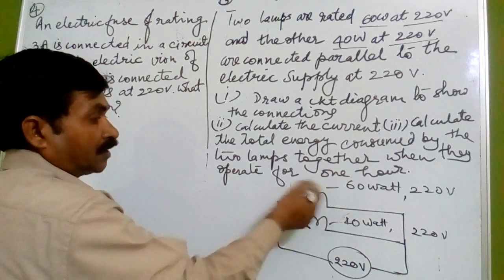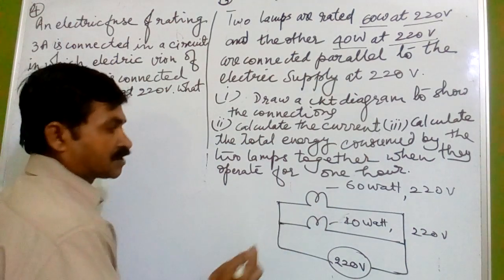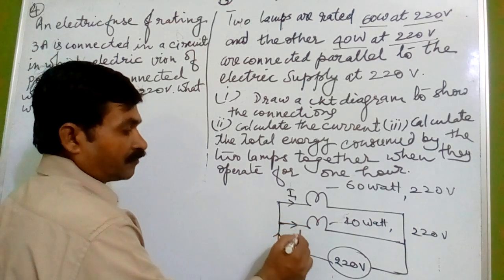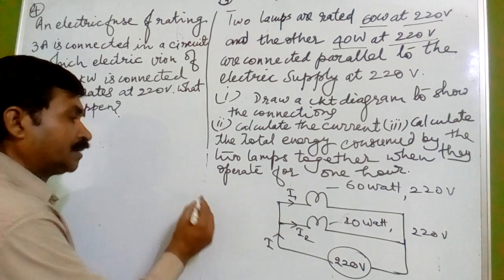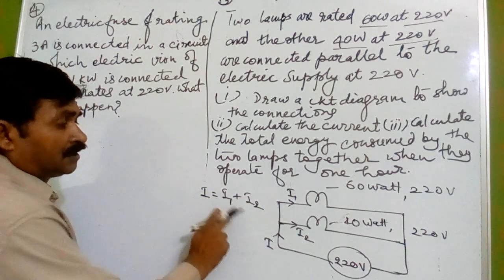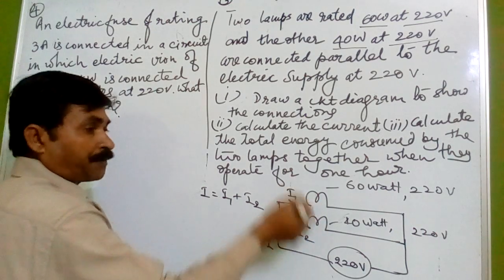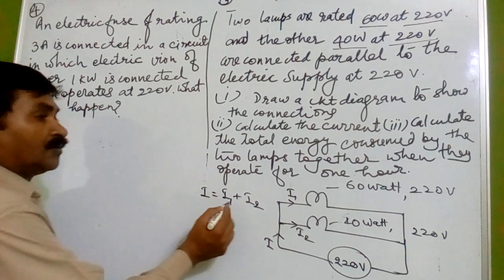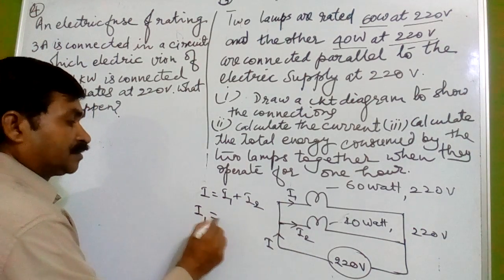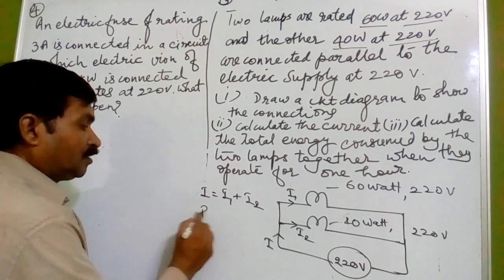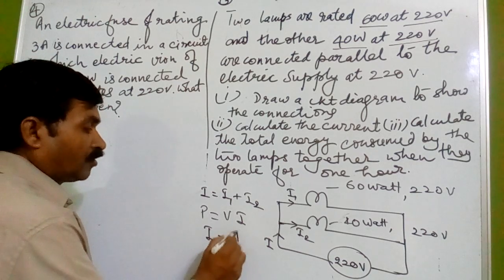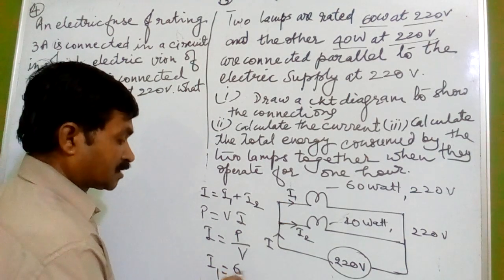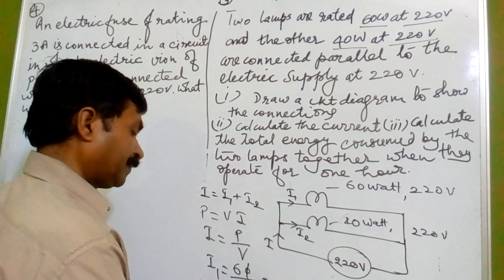Now we calculate the current. When electric potential is applied, there will be a flow of current. The total current I equals I1 plus I2. We calculate I1 first because in parallel connection current is always divided, whereas in series the same current flows but voltage is divided. Using the formula P = V × I, we get I = P/V. So I1 = 60 divided by 220, which is 3 upon 11.